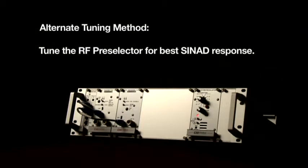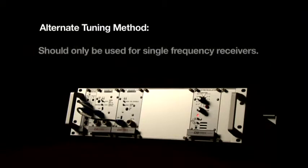The alternate method is to tune the RF preselector for best SINAD response. The alternate method should only be used for single frequency receivers.